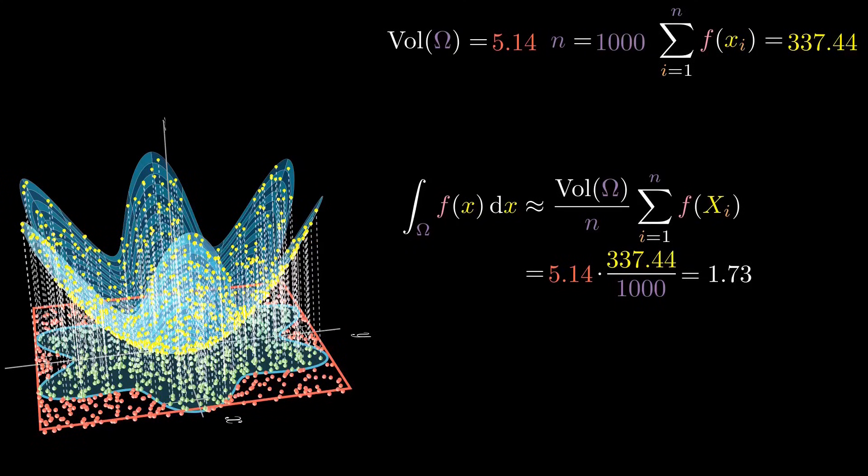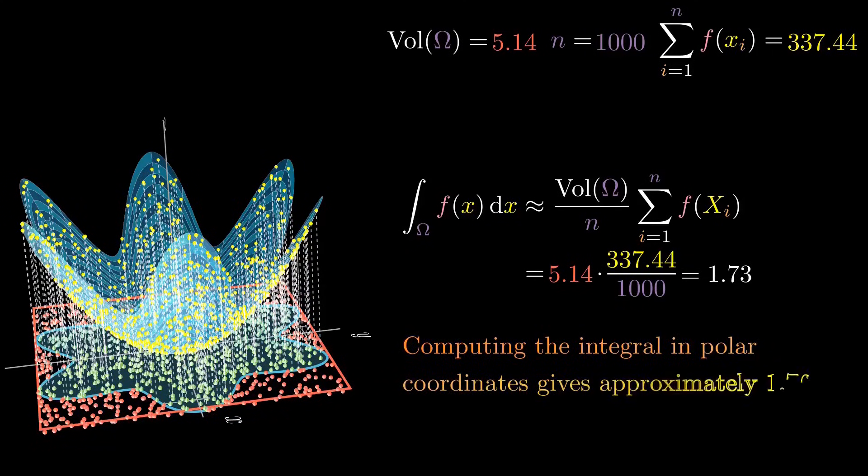Finally, evaluating the integral in polar coordinates yields an approximate value of 1.76, accurate to two decimal places. Hence, the error in the Monte Carlo estimate was relatively small. A more accurate approximation could be obtained by increasing the number of samples.